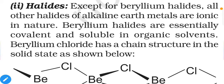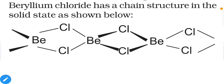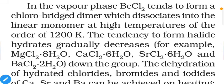Halides of alkaline earth metals: except for beryllium halides, all other halides of alkaline earth metals are ionic in nature. Beryllium halides are essentially covalent and soluble in organic solvents. Beryllium chloride has a chain structure in the solid state — because of its covalent nature it attaches with multiple chlorine atoms, giving a three-dimensional chain structure.